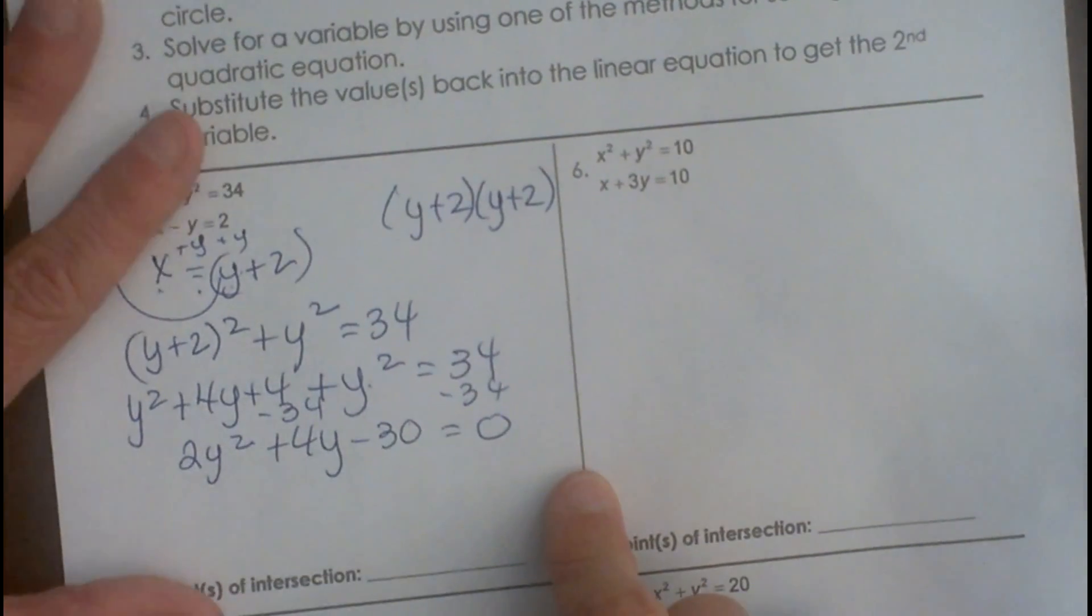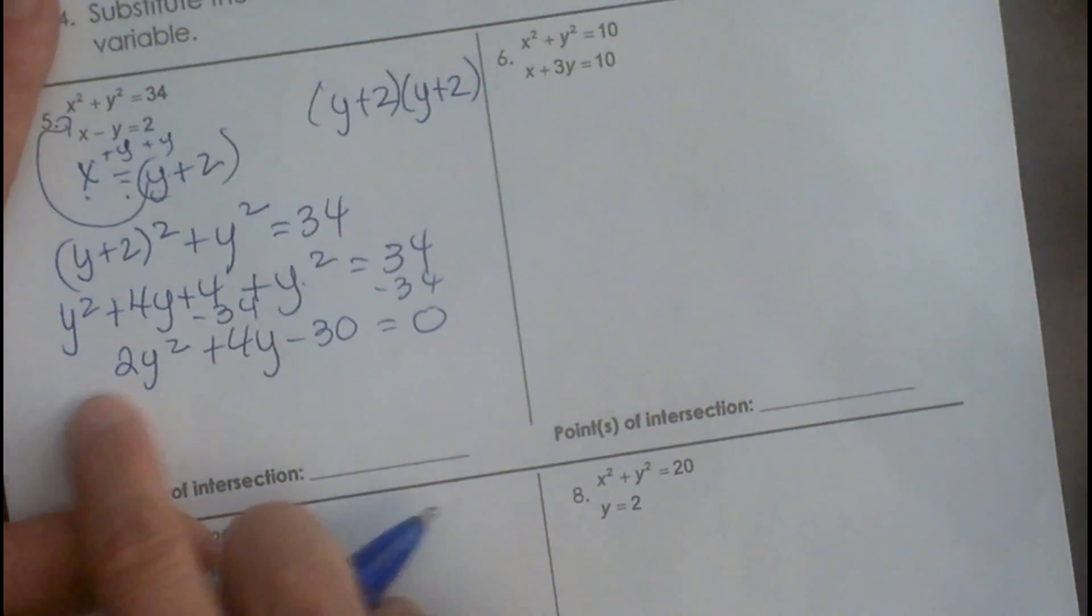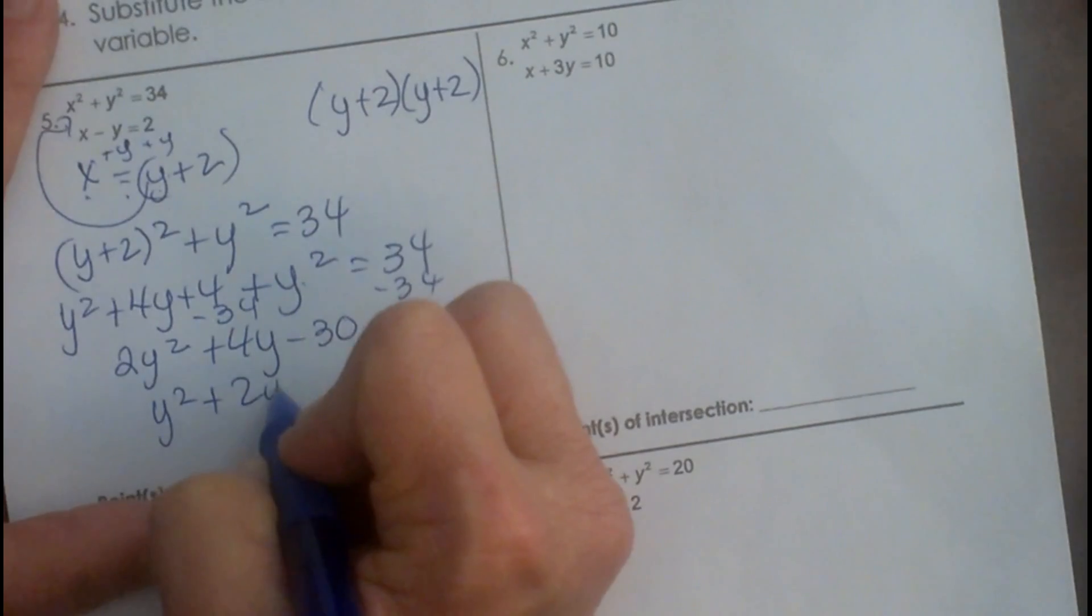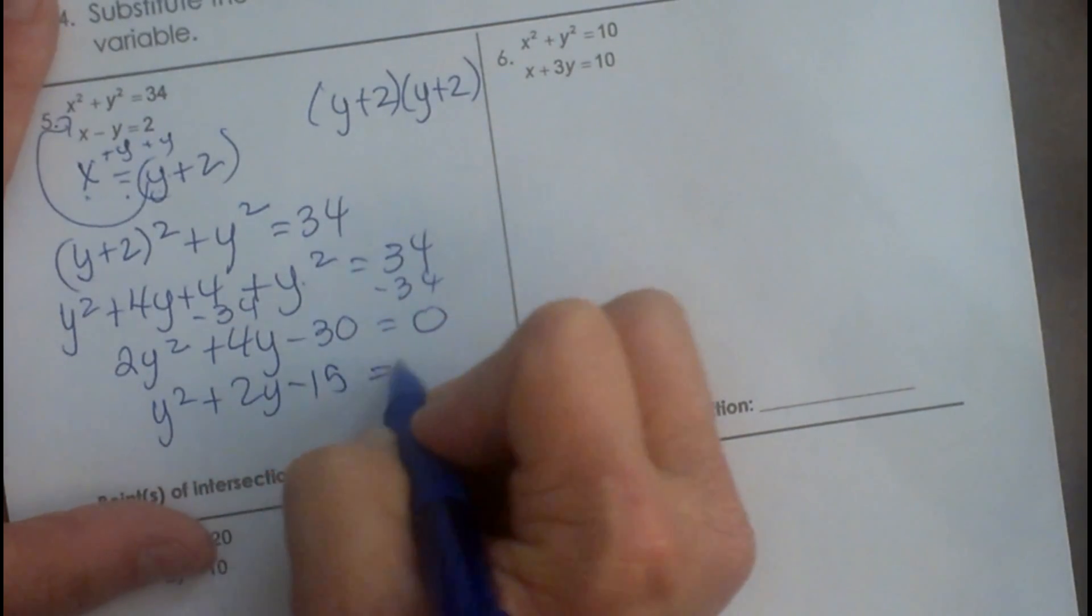Always on quadratics get it set equal to 0. Now divide everything by 2 because it's easy and makes it easier. So we can now factor this.